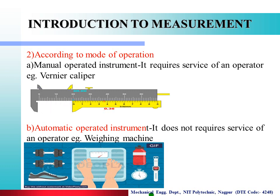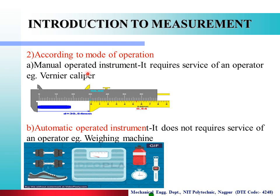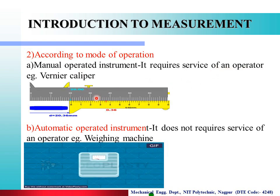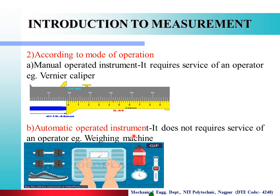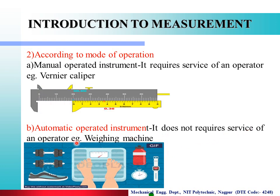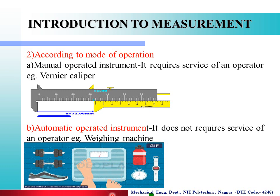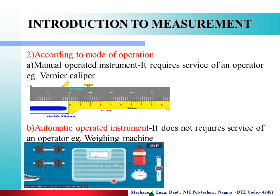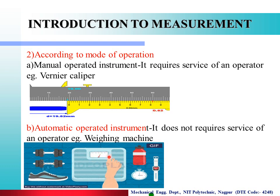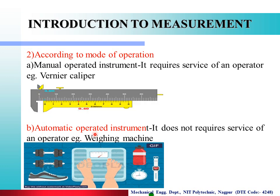Next, according to the mode of operation: the first type is manual operated instrument — it requires the service of an operator. For example, a vernier caliper requires an operator to use it. The second type is automatic operated instrument — it does not require the service of an operator. Example: a weighing machine. A human being steps on it and the weight is automatically displayed. That is the automatic operated instrument.